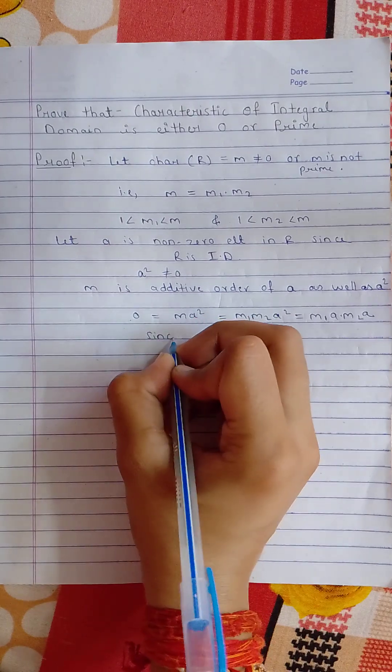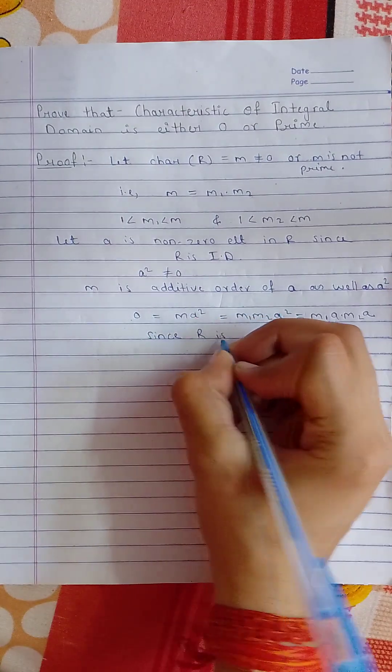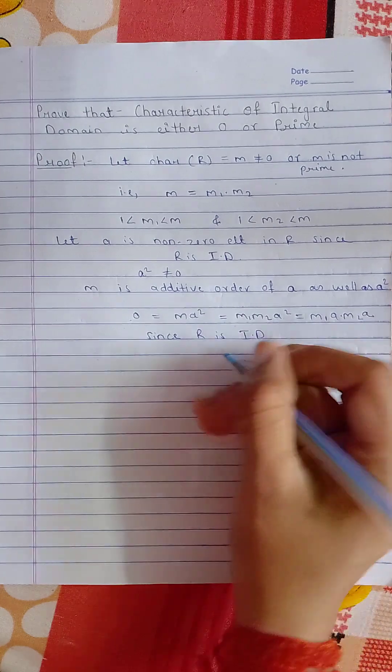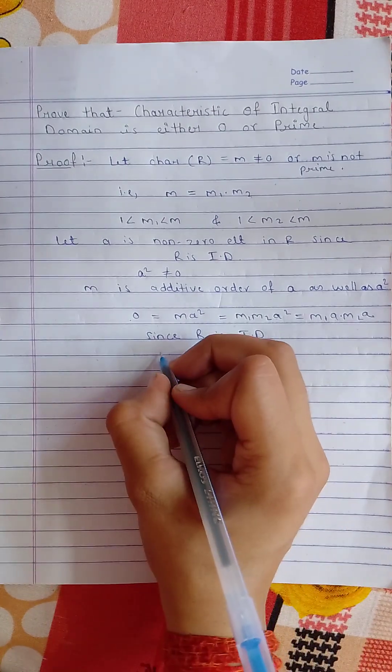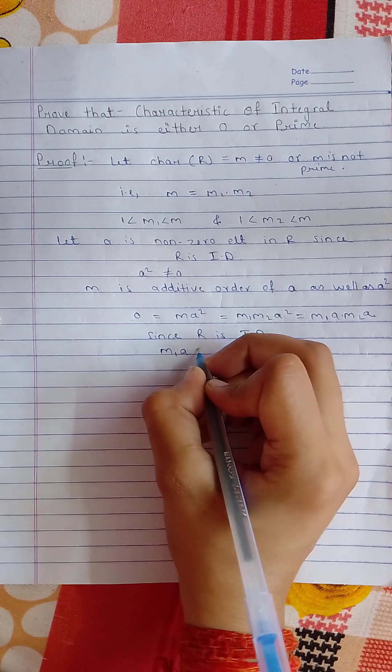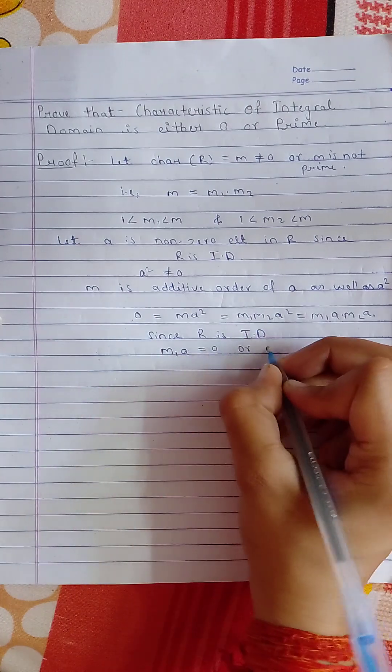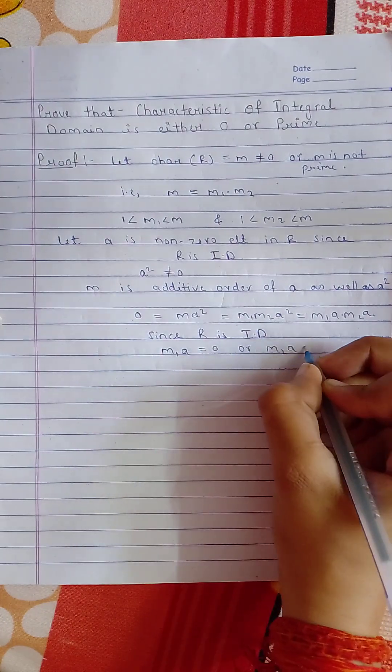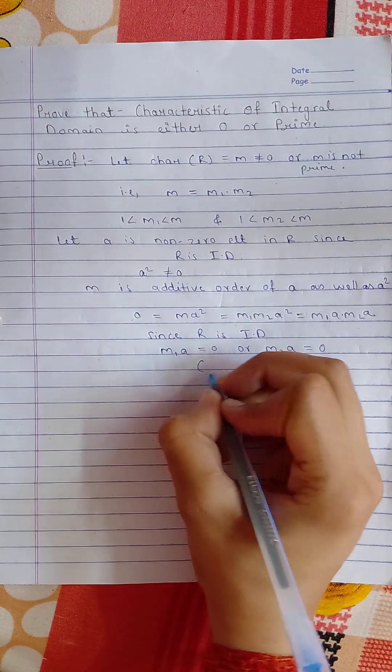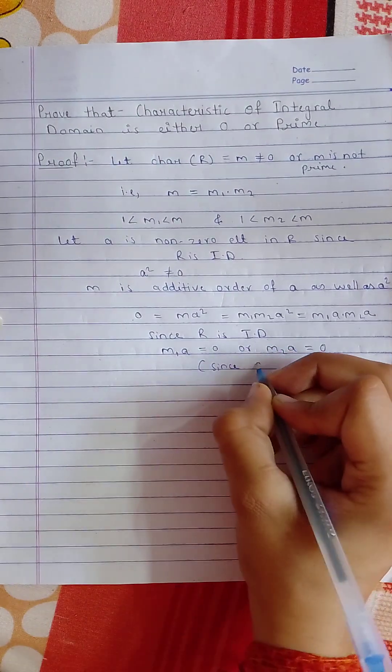Since we know that R is an integral domain, by the integral domain property, either m1 times a equals 0 or m2 times a equals 0.